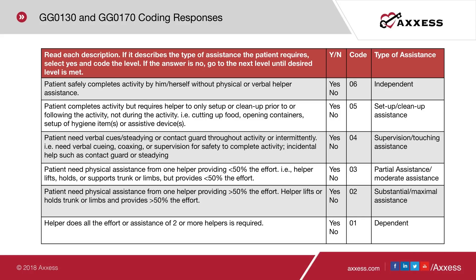The last three levels involve physical assistance. If the patient needs physical assistance from one helper providing less than half the effort — the helper lifts, holds, or supports the trunk or limbs — code 03, partial or moderate assistance. If the helper provides more than half the effort, code 02, substantial or maximum assistance. If the helper does all the effort or assistance of two or more helpers is required, code 01, dependent.